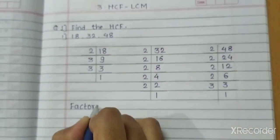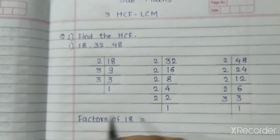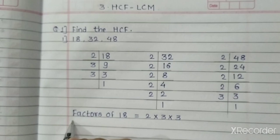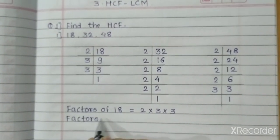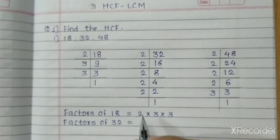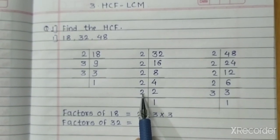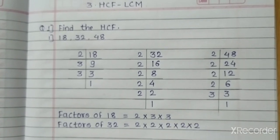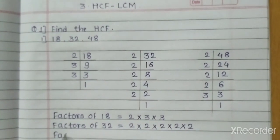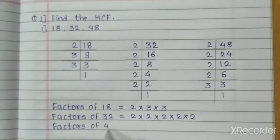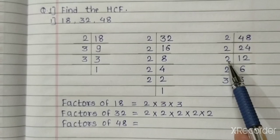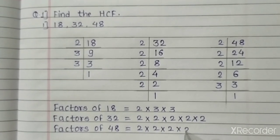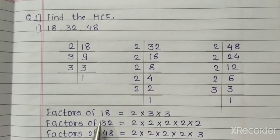Now write the factors: factors of 18 are 2 × 3 × 3. Factors of 32 are 2 × 2 × 2 × 2 × 2 (five times). Factors of 48 are 2 × 2 × 2 × 2 × 3. These are all the factors of 18, 32 and 48.